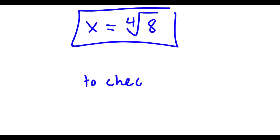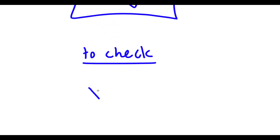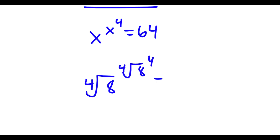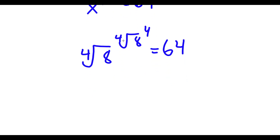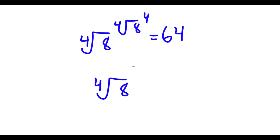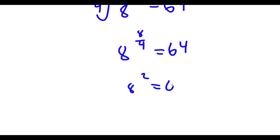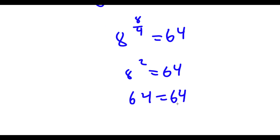Now to check: my original equation was x to the power of x to the power of 4 is equal to 64. With x equal to the fourth root of 8, I have fourth root of 8 to the power of fourth root of 8 to the power of 4, equal to 64. The fourth root of 8 to the power of 4 is simply 8, so I have fourth root of 8 to the power of 8 equal to 64. This is the same as 8 to the power of 8 over 4, meaning 8 to the power of 2 equals 64, and 64 equals 64. So this is correct.